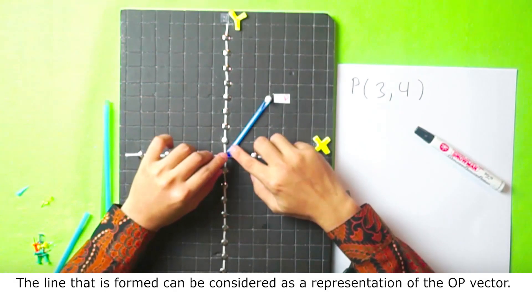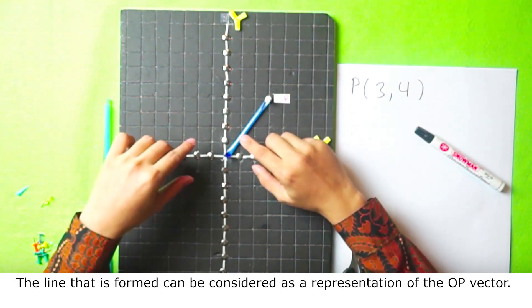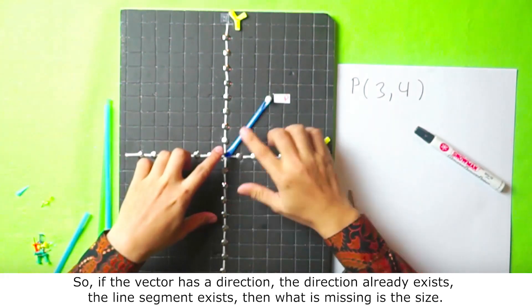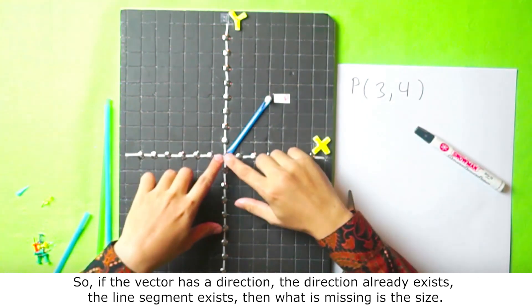The line that is formed can be considered as a representation of the OP vector. So if the vector has a direction, the direction already exists, the line segment exists. Then what is missing is the size.